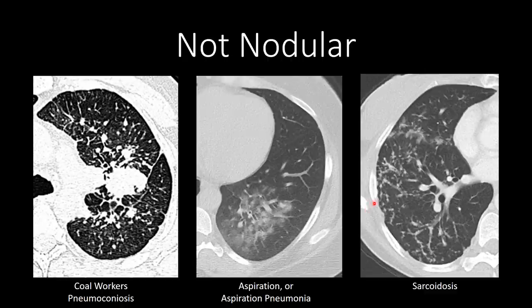Here we have another case of multiple nodules — micro nodules in a perilymphatic pattern in the setting of sarcoidosis. There may be a little bit of patchy ground glass here, but the predominant pattern is perilymphatic nodules. This is sarcoidosis and should not be mistaken for organizing pneumonia.